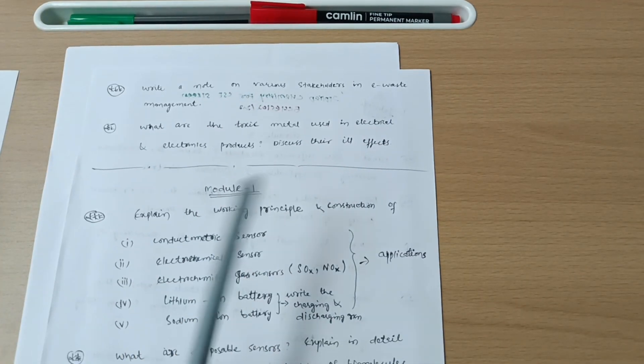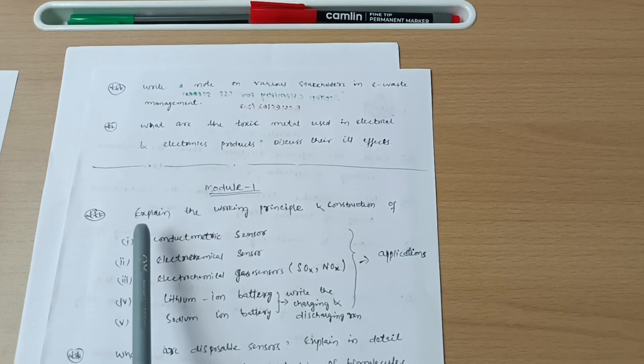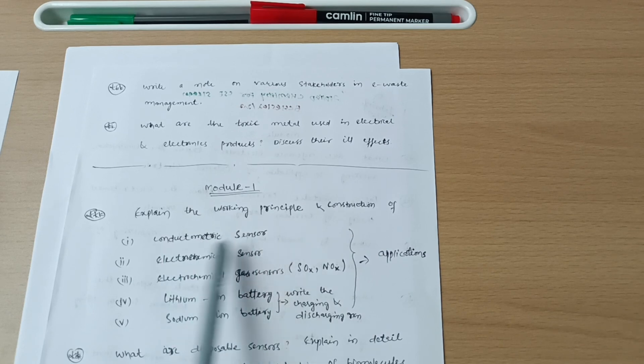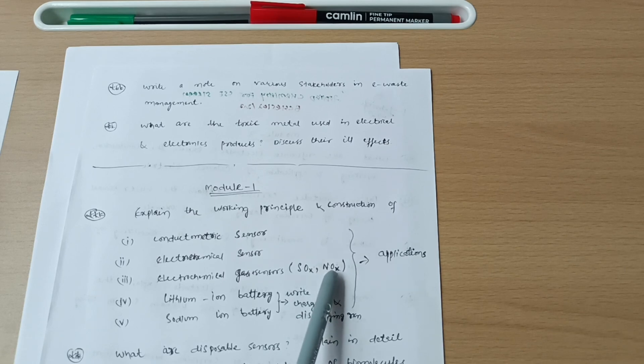Now next is module first, in which you have to cover some construction and working principle parts. Explain the working principle and construction of conductometric sensors, electrochemical sensors, and electrochemical gas sensors, especially sodium oxide and nitrogen oxide.